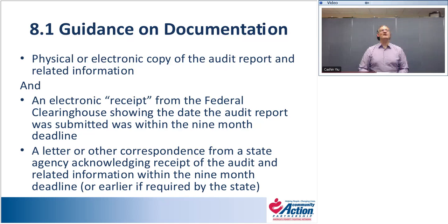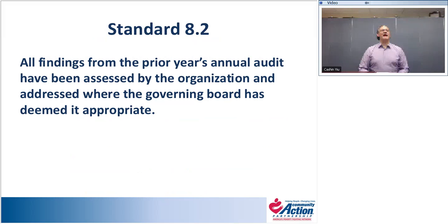Standard 8.2: All findings from the prior year's annual audit have been assessed by the organization and addressed where the governing board has deemed it appropriate. This is a two-part standard — ensuring you've assessed any findings and that the board has taken action if necessary. Key questions include: Did the audit contain any findings? Were corrective action plans submitted to the appropriate audit oversight entity?